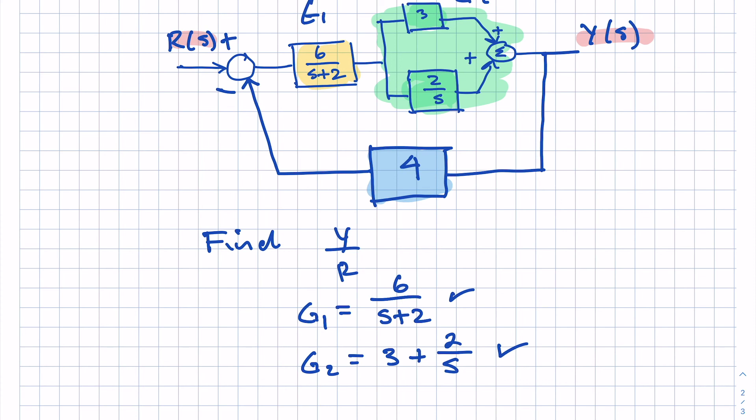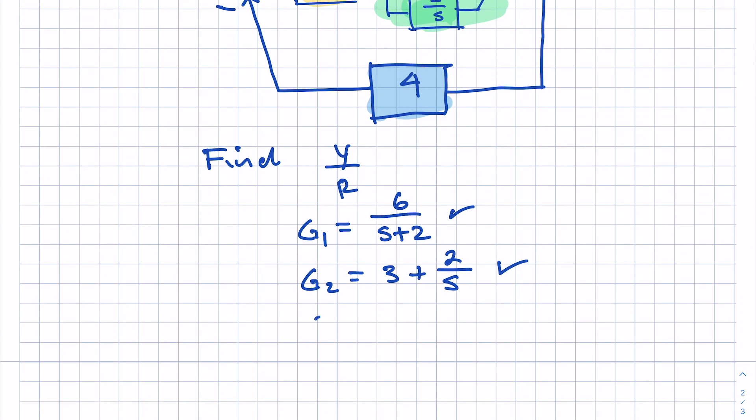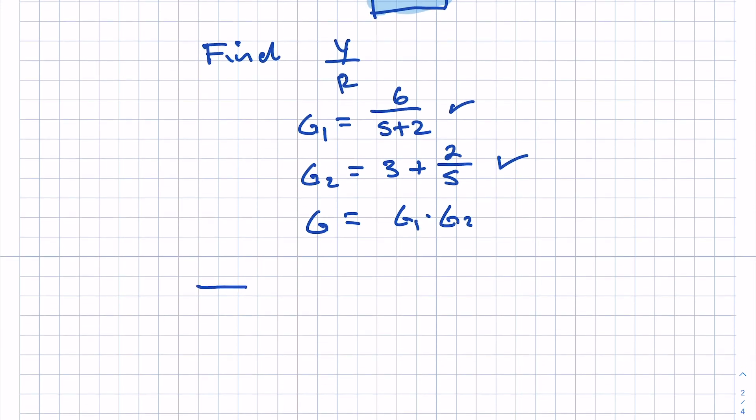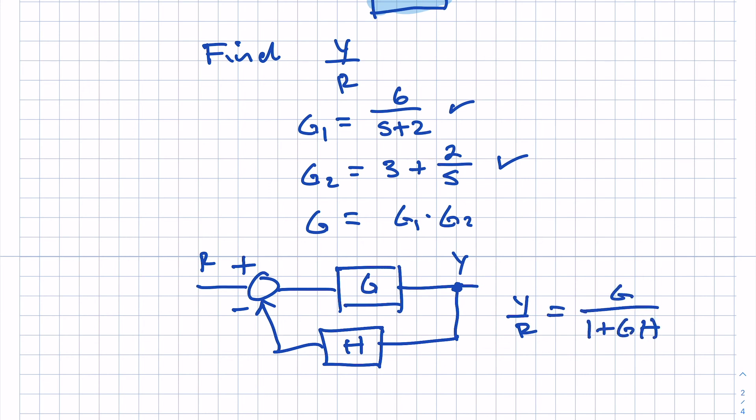So we now have G1, we have G2. And then the overall G is just G1 times G2. So I call it G because if you go back to that previous example, we had G as the feedforward transfer function, and then we had H in the feedback path. And we know that this transfer function is G over 1 plus G H. So that's the pattern we looked for.